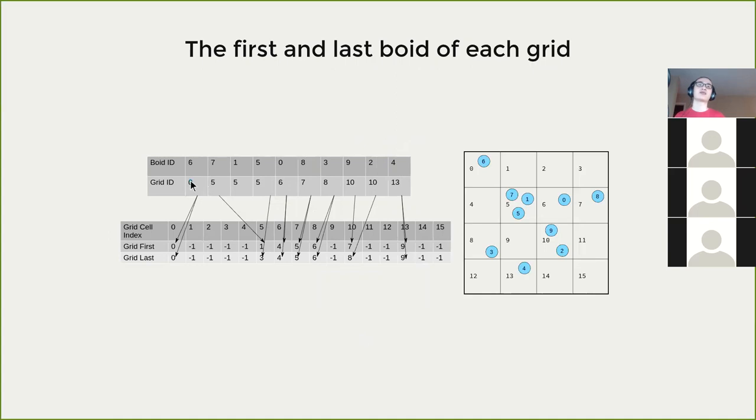With this kind of sorted grid ID array, then we can simply generate this grid first and grid last array. We have grid first and grid ID 0 here. So the grid first of 0 is 0, grid last of 0 is 0. 1, 2, 3, 4 does not have any boids in them. So we just have some dummy value negative 1 in them. And for 5, we have 1, 2, 3. So we start from 1 and end at 3, etc. With those two arrays as first and last array as representation, we can actually, when we say what is the boid in a grid cell, we can just loop through from 1 to 3, which is just 1 to 3.